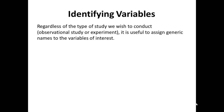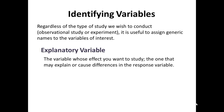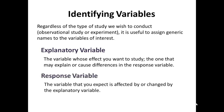Let's look at identifying variables. Regardless of the type of study — observational study or experiment — it's useful to assign generic names to the variables of interest. The explanatory variable is the variable whose effect you want to study, the one you think might be causing the differences you see in the response variable. The response variable is the variable that you expect is being affected by or changed by the explanatory variable.